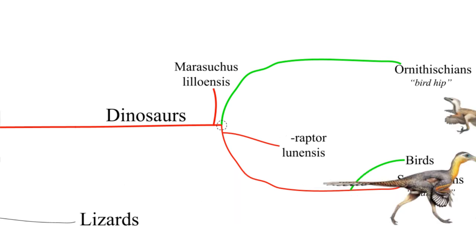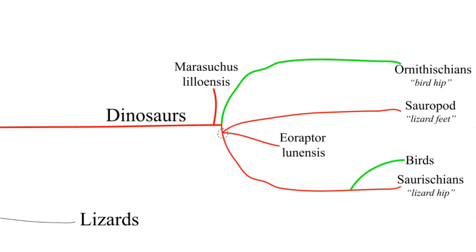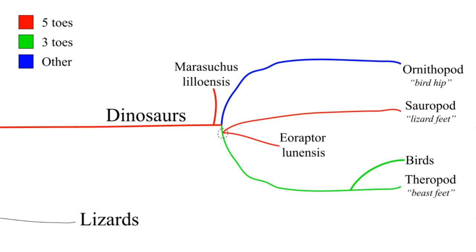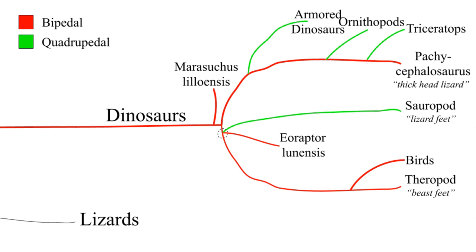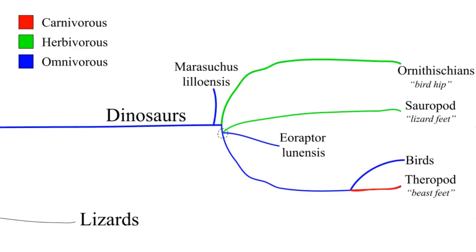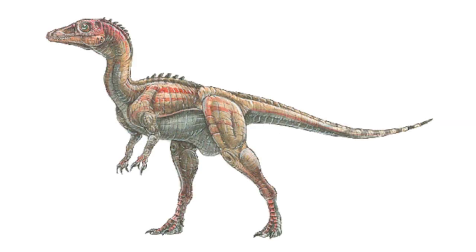Among the Saurischians, we have another split: lizard feet and beast feet. Eoraptor confirms whether a lot of the features between these two groups were basal or derived. Eoraptor has five claws, confirming that the three-toed theropods are derived. Eoraptor also walks upright, confirming that the quadrupedal sauropods are derived — not surprisingly, because we can see it develop with prosauropods like Massospondylus. The jury was out for a while on diet, but now it's settled on omnivore, and both paths are derived. I don't think people care enough about this — are we really unwilling to reconstruct the potential common ancestor of all the dinosaurs? I give it an 8 out of 10.